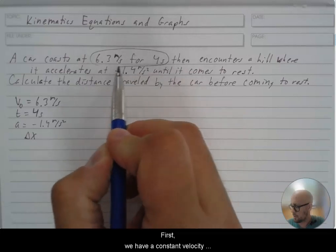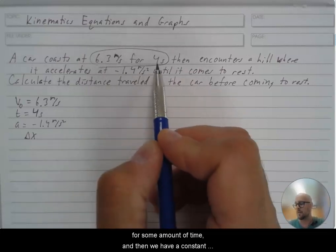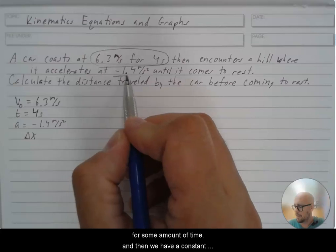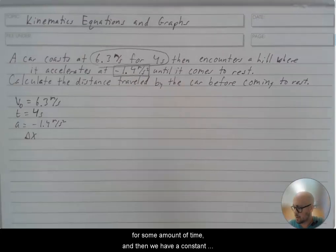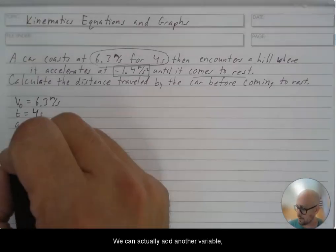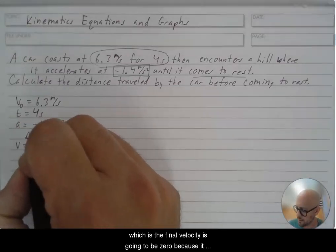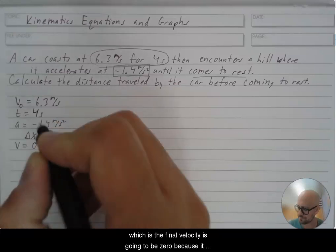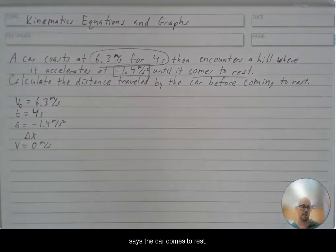Like first, we have a constant velocity for some amount of time. And then we have a constant acceleration until it comes to rest. We can actually add another variable, which is the final velocity is going to be zero because it says the car comes to rest.